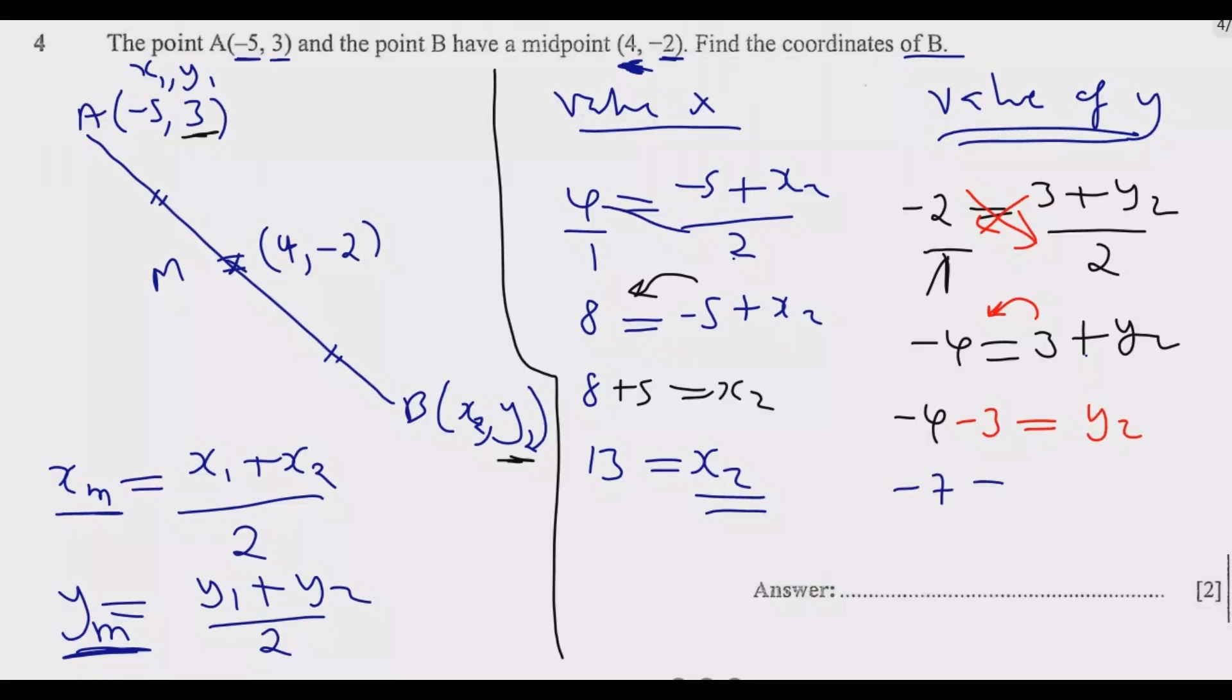So the coordinates of B becomes 13 comma negative 7. So this is how you answer this question to get the 2 marks.